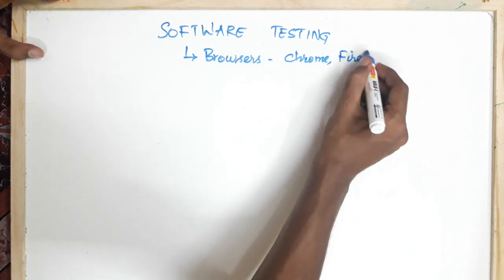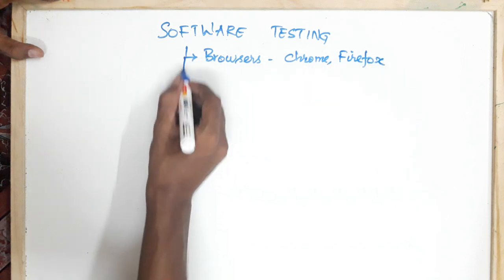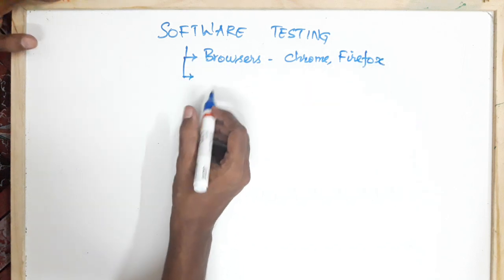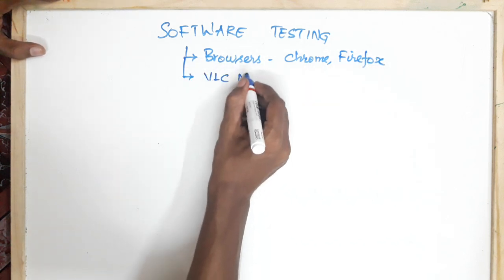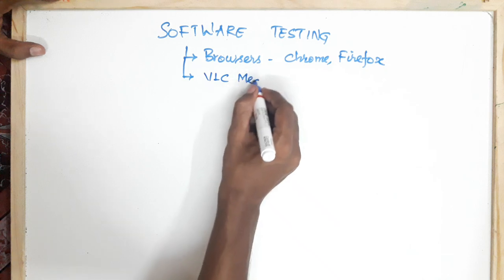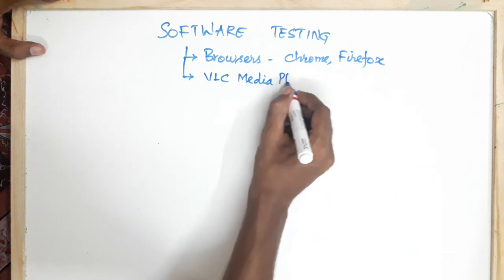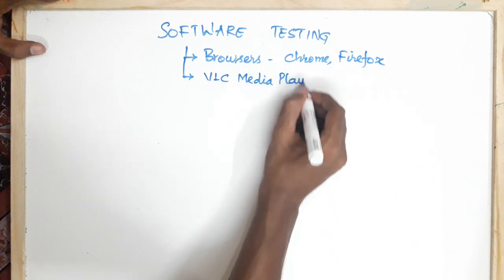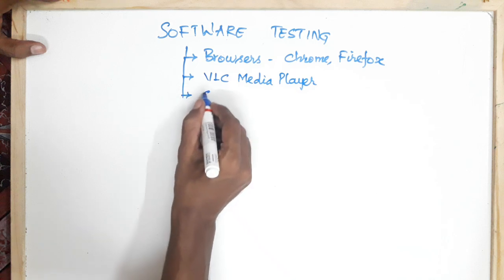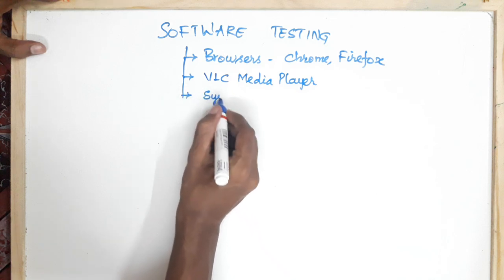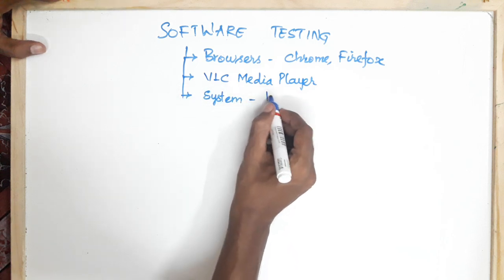We will talk about software categories. We will talk about VLC Media Player and system software. We will talk about operating systems.